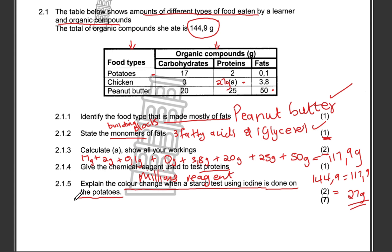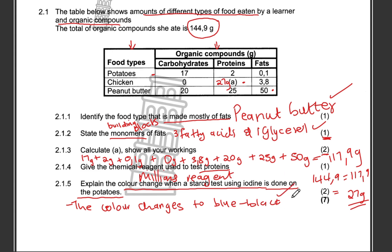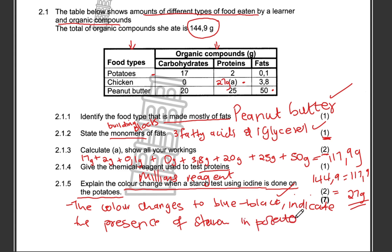So we start by talking about the color change — it changes to a blue-black color when you add drops of iodine, and that indicates the presence of starch in potatoes. We use iodine as an indicator. If iodine changes to blue-black, starch is present. If iodine remains reddish-brown, there is no starch present.